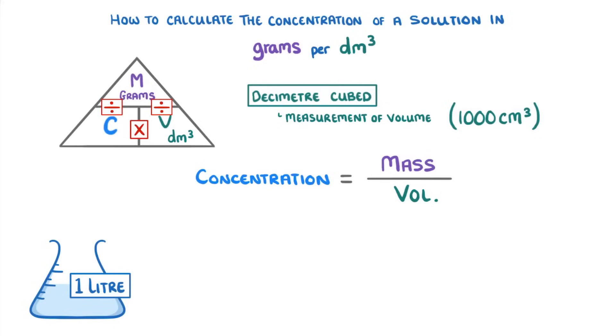So you just cover up the thing that you want and read the triangle. So if we wanted to find the concentration, we'd cover up the C, and do mass divided by volume. Or if we wanted the mass, we'd do concentration times volume. Finally, if we wanted volume, we would do mass divided by concentration.